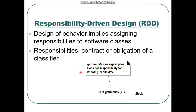For example, consider a 'get due date' message. We can say that it is a message, and what it implies is that a book has responsibility for knowing its due date — a book is just an object, and that is its responsibility.